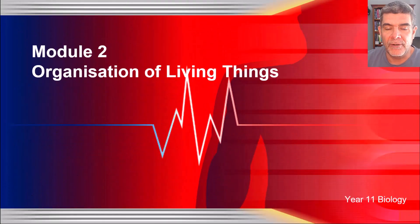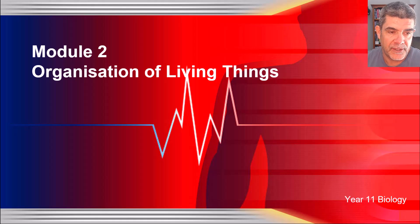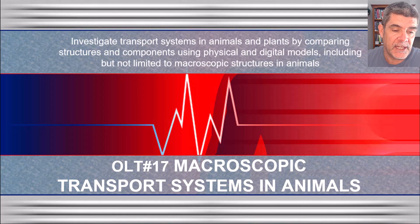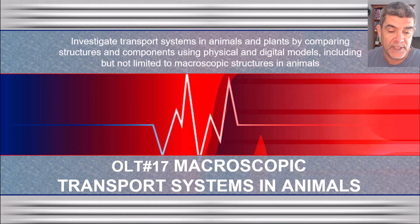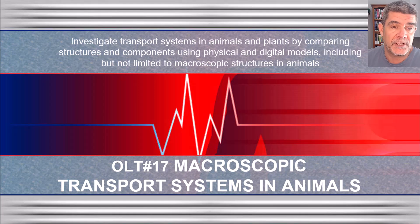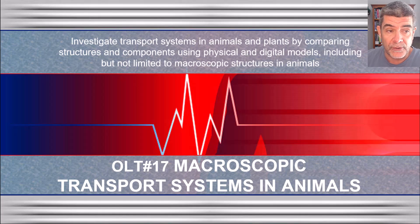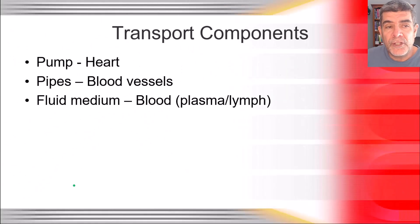Hi students and welcome to Year 11 Biology, Module 2, Organisation of Living Things. This is video number 17 and we're going to have a quick look at some of the macroscopic transport systems in animals. Our specific learning outcome is for students to investigate transport systems in animals and plants by comparing structures and components using physical and digital models, including but not limited to macroscopic structures in animals.